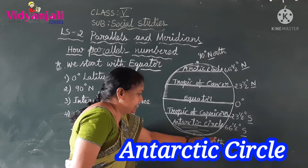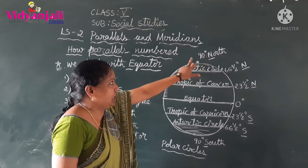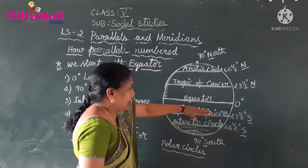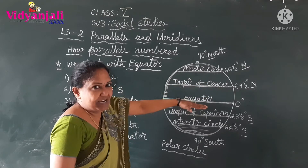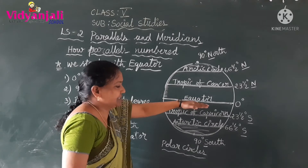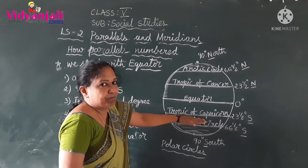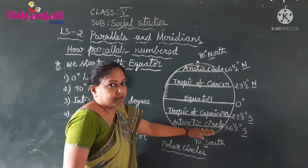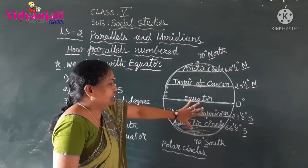Now the north pole is at the top and the south pole is at the bottom. Our globe is divided into five important parallels: the first is the equator, the second is the Tropic of Cancer, the third is the Tropic of Capricorn, the fourth is the Arctic Circle, and the fifth is the Antarctic Circle in the south. These are the five important parallels.